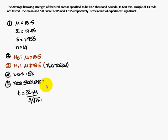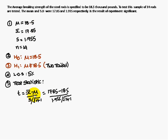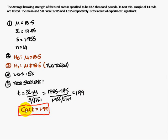The test statistic formula is: t equals x-bar minus mu, divided by s divided by root of (n minus 1). Substituting: x-bar is 17.85, mu is 18.5, s is 1.955, and root of (14 minus 1). Simplifying, we get the calculated t value equal to 1.19.